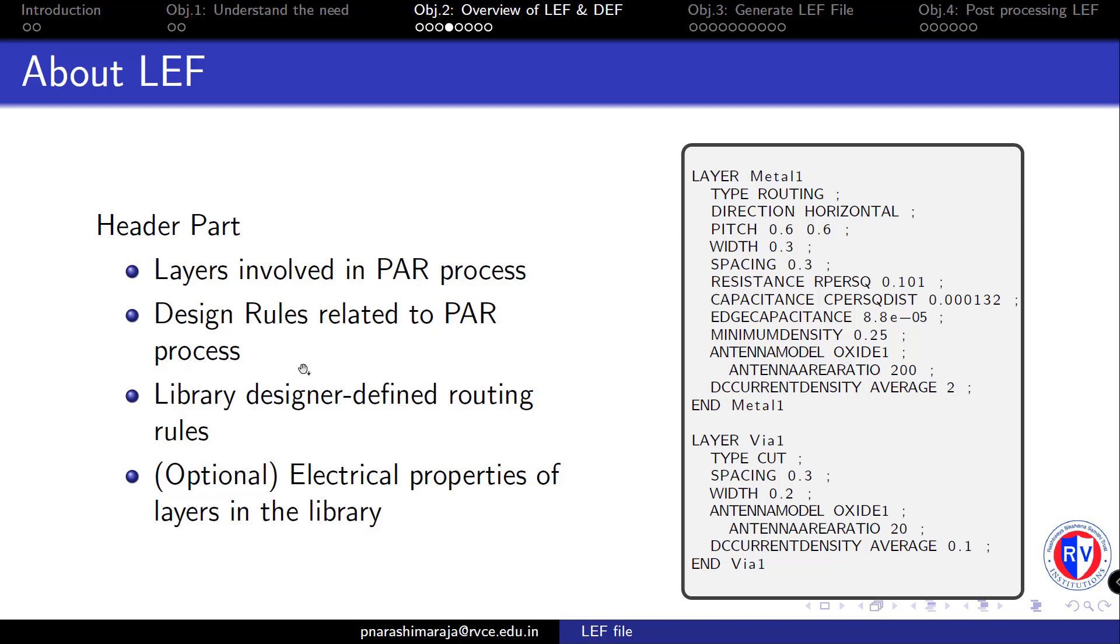It also contains a part of the design rules such as the minimum metal spacing, minimum metal width, and it doesn't include rules like separation of N-wells or the minimum width of poly or the minimum spacing between poly.